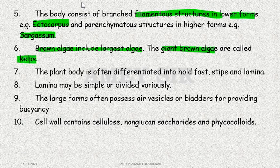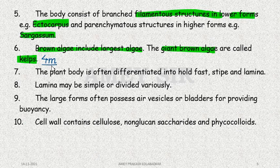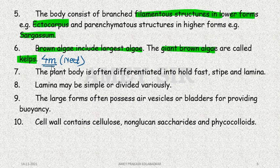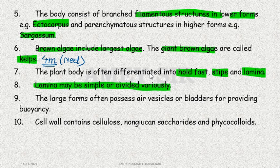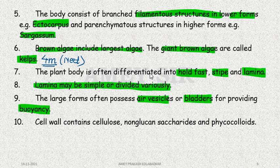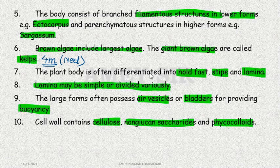The giant Brown Algae are the largest algae and are called Kelps — this is an important MCQ point. The plant body is differentiated into holdfast, stipe, and lamina (simple or variously divided). Air vesicles and bladders are present. The cell wall shows cellulose and non-glucan saccharides along with the phycocolloids.